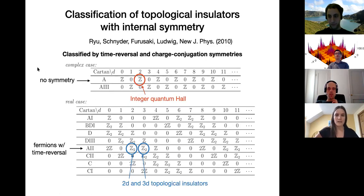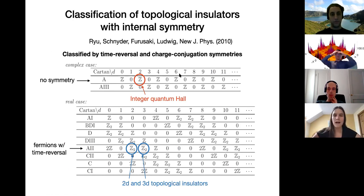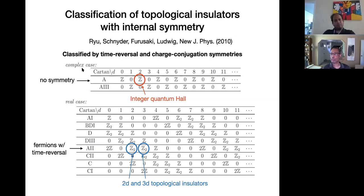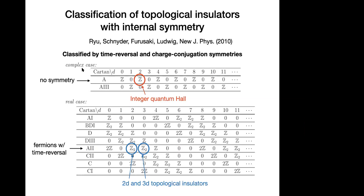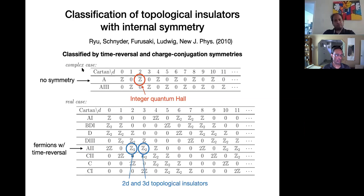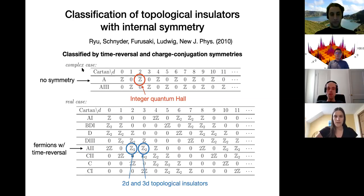Starting from the beginning: this is the tenfold way table, probably well known to this audience. Across the top are dimensions, down the side are symmetry classes. This is a classification of topological insulators with internal symmetry, meaning symmetry that acts on a single lattice site. I've circled some of the more well-known phases. If we have crystal symmetry, then it goes beyond this classification.